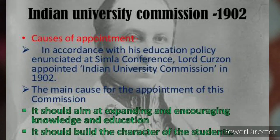Next is the Indian University Commission. As the name suggests, this commission is related to Indian universities. It recommended that secondary schools should come under the universities. On 27th January 1902, the Government of India announced the establishment of the Indian Universities Commission to review the conditions and prospects of Indian universities.